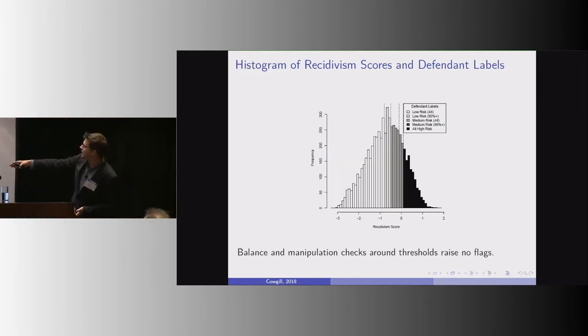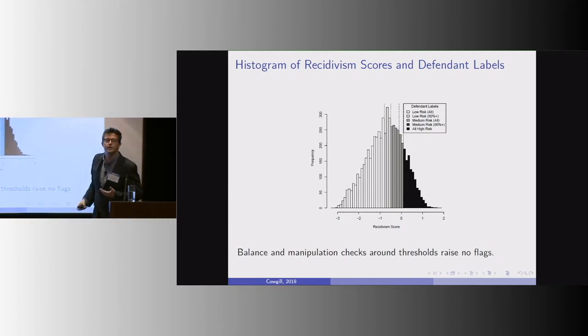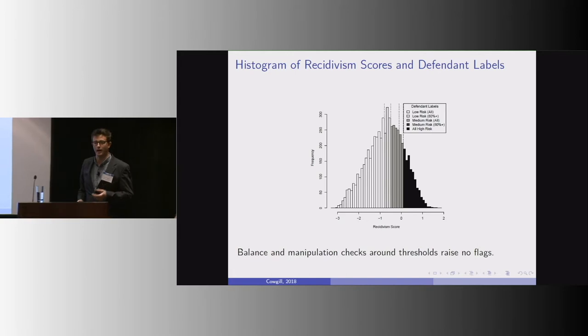And here's what I find. Well, first of all, here's what the distribution of these scores look like. Crossing these thresholds pretty cleanly affects whether you're assigned low, medium, high.